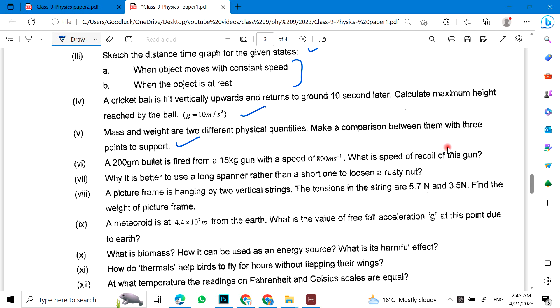A 200 gram bullet is fired from a 15 kg gun with a speed of this. So we need to calculate the recoil velocity. Or, why it is better to use a long spanner rather than a short one to loosen a rusty nut.